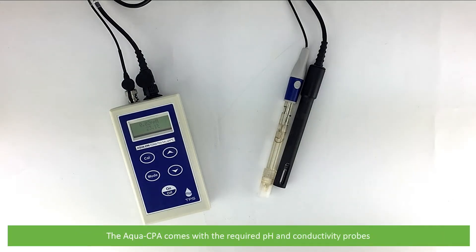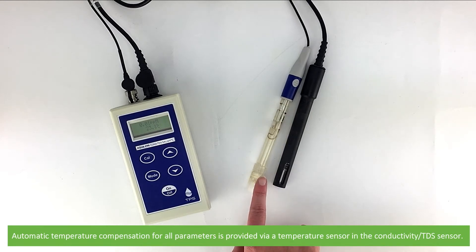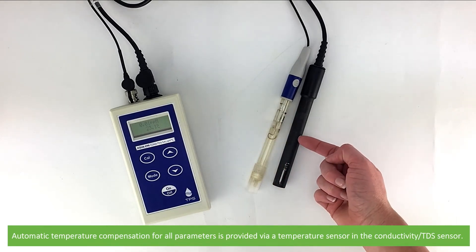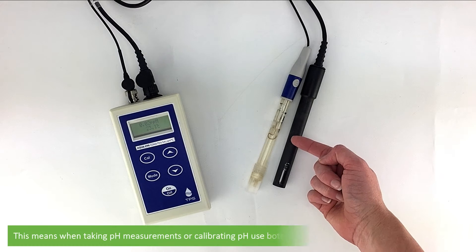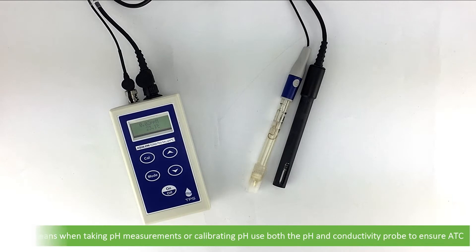The Aqua CPA comes with the required pH and conductivity probes. Automatic temperature compensation for all parameters is provided via a temperature sensor in the conductivity sensor. This means when taking pH measurements or calibrating pH, use both the pH and conductivity probe to ensure ATC.